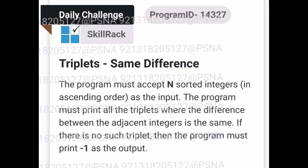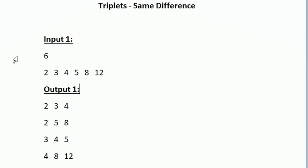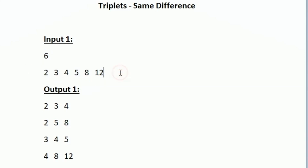This is the question asked in today's skill track daily challenge. In the first line of our input we will be given an integer n, and then we will be given an array of n integers. This integer array will always be in sorted order.